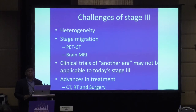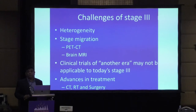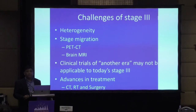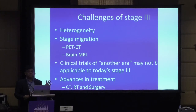Once osimertinib becomes neoadjuvant, you will get different kinds of patients. Some patients on osimertinib want a holiday from chemotherapy at $3,000 per month — drugs are expensive. Surgery is cheaper. You operate when the patient is completely downstaged and give the patient a break from osimertinib for one to two years, though you must tell the patient the cancer is coming back. With immunotherapy at $10,000 a month, surgery becomes an even more financially viable option.